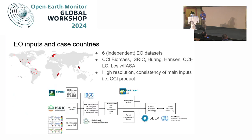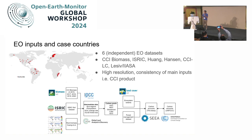We ended up demonstrating this carbon accounting for six countries, mostly representing all continents except Australia. We were able to use independent datasets, mainly the CCI biomass and also the ISRIC dataset and the root biomass by Huwang et al., the Hansen dataset, the forest management dataset of IASA by Lesiv et al., and also the land cover. Both CCI products have been used. We were able to derive annual SOC changes.